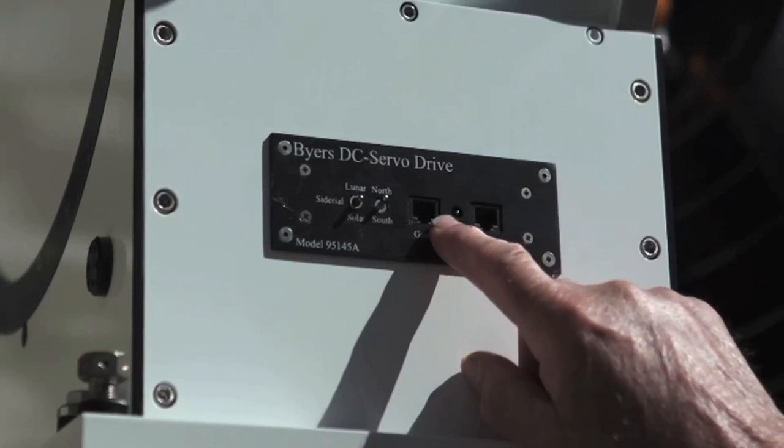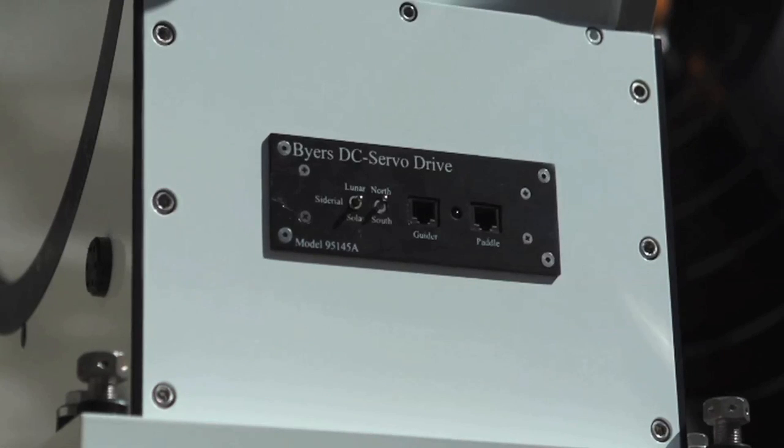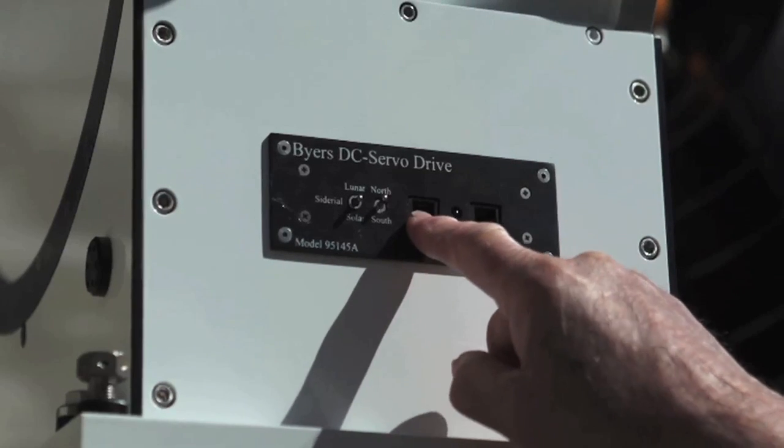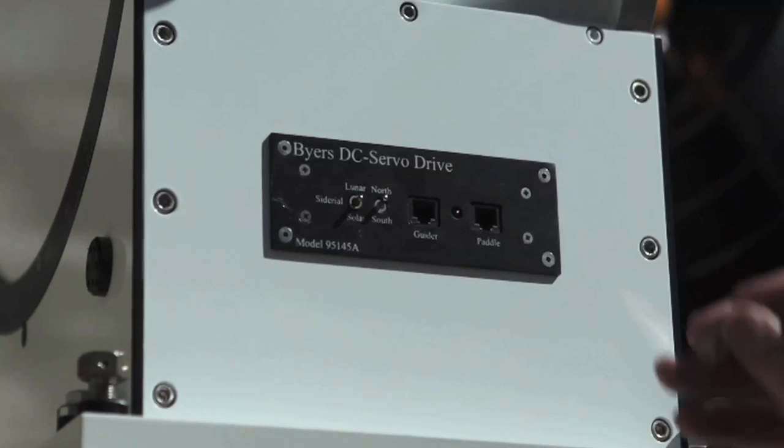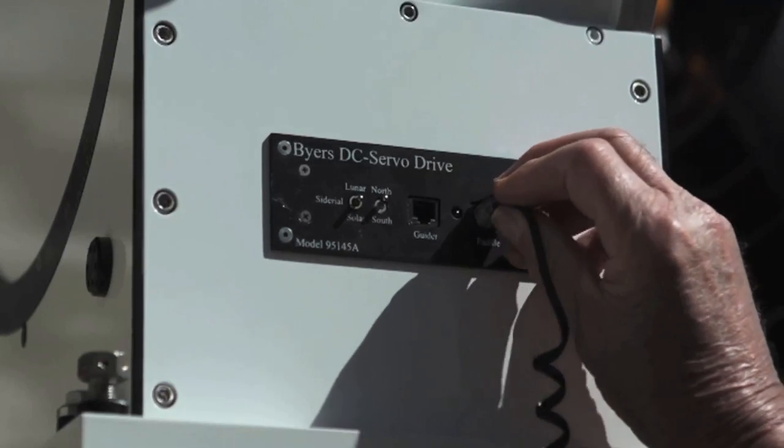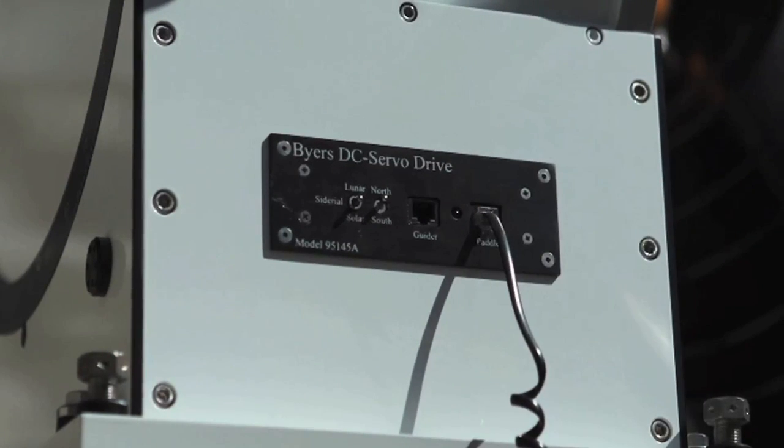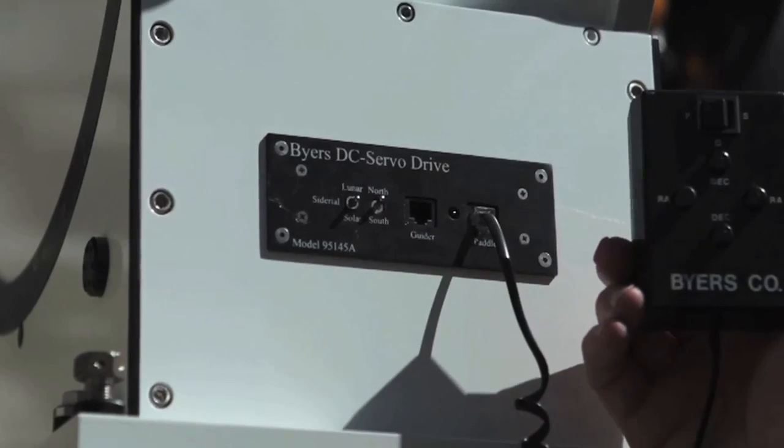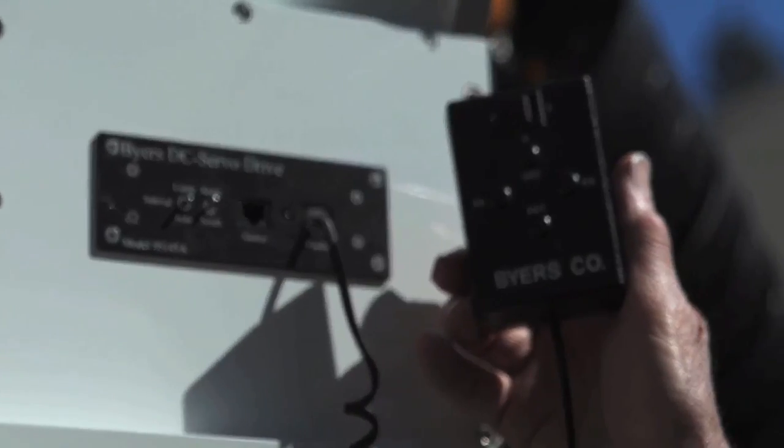This port here is for auto guiding. If you're taking long exposure photographs you plug your auto guider into this and the hand paddle plugs right into this which through the push buttons operates the telescope.